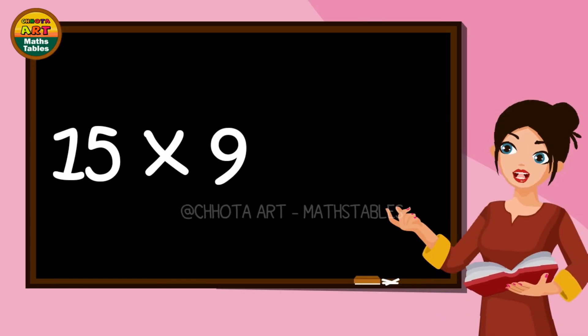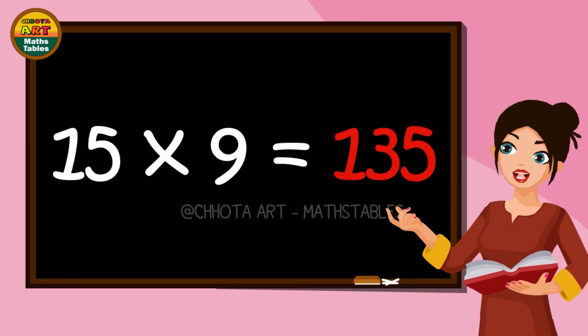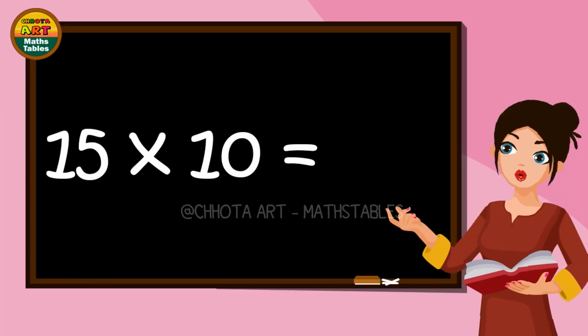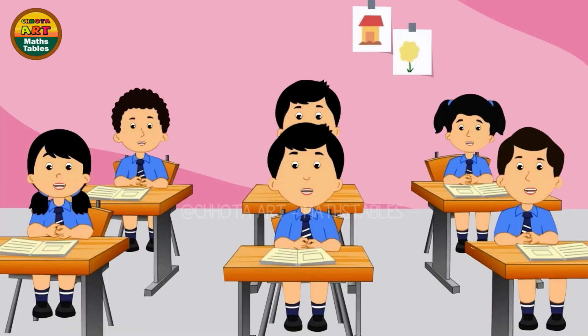Fifteen nines are a hundred and thirty-five. Fifteen tens are a hundred and fifty.